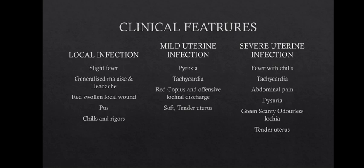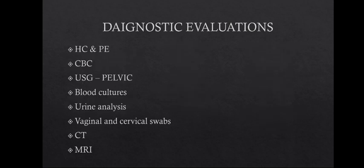The uterus is soft and tender in mild uterine infection. In severe uterine infection, there is fever with chills, tachycardia, abdominal pain, dysuria, reduced urination, and local discharge — which in this case is green, scanty, and odorless. The uterus is tender.